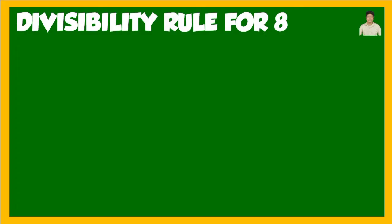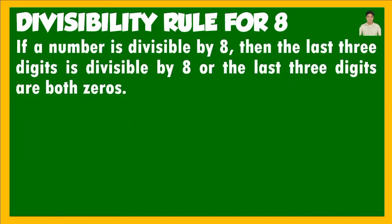Now, what about the divisibility rule for 8? If a number is divisible by 8, then the last 3 digits are divisible by 8, or the last 3 digits are all zeros. For divisibility by 8, we consider the last 3 digits — not just the last 2 digits. Alternatively, if the last 3 digits are all zeros, the number is automatically divisible by 8.